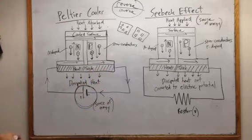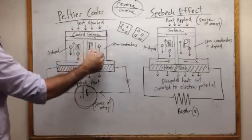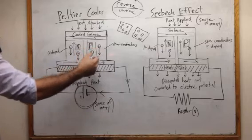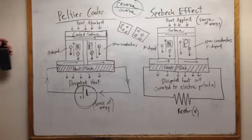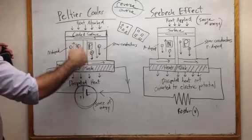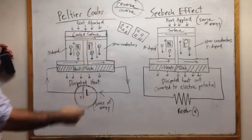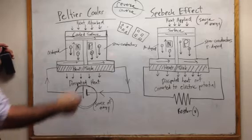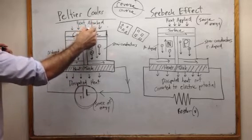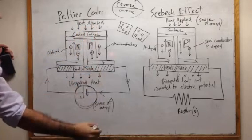Basically, depending on how well these two materials can exchange charge and allow for a potential to show up will determine how cold this could get and how hot this side will get. Because obviously if you pull the heat from somewhere, the heat has to come out from some other place.